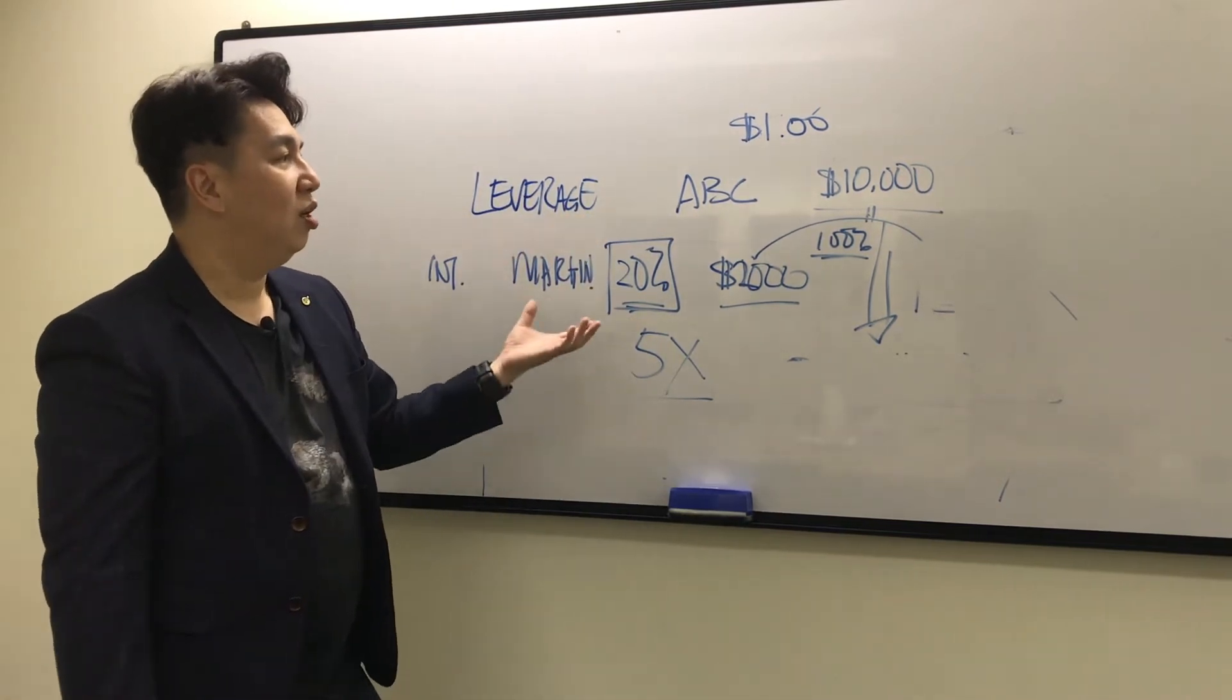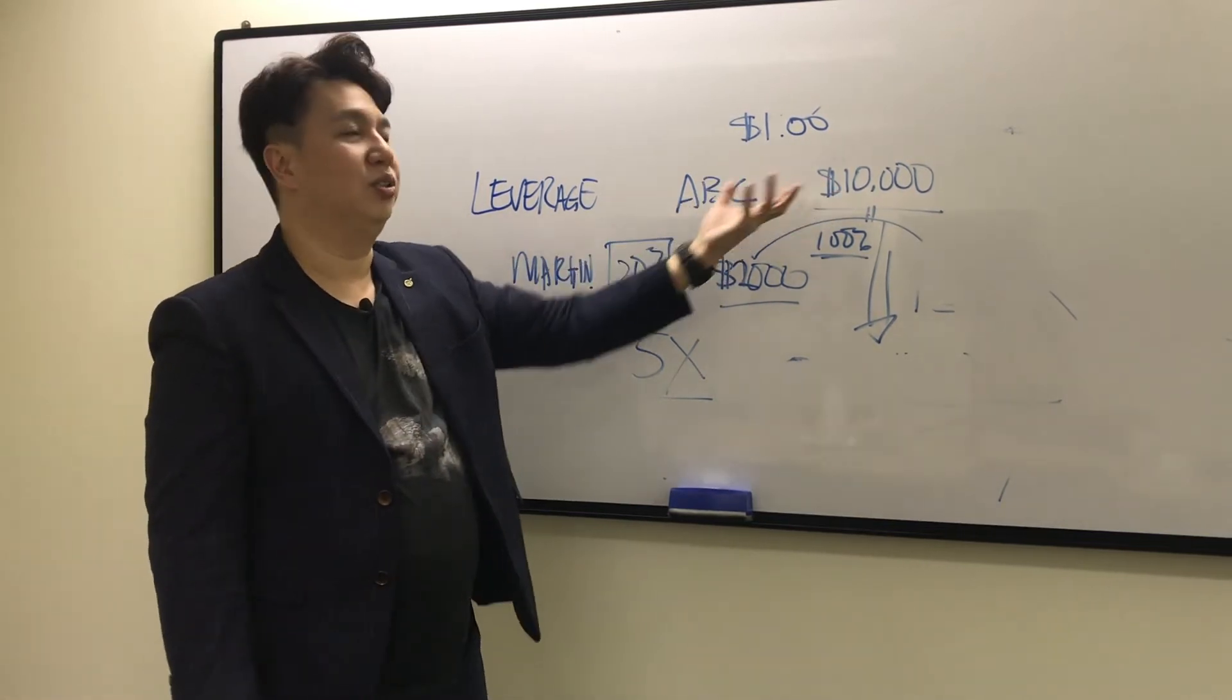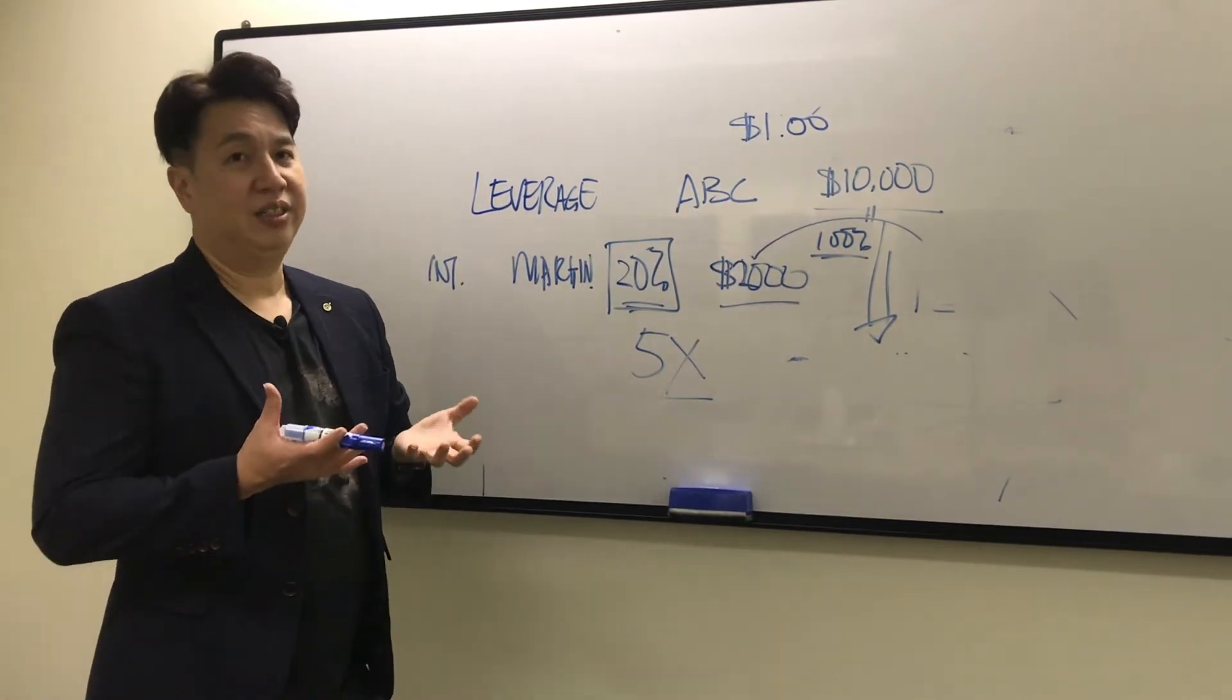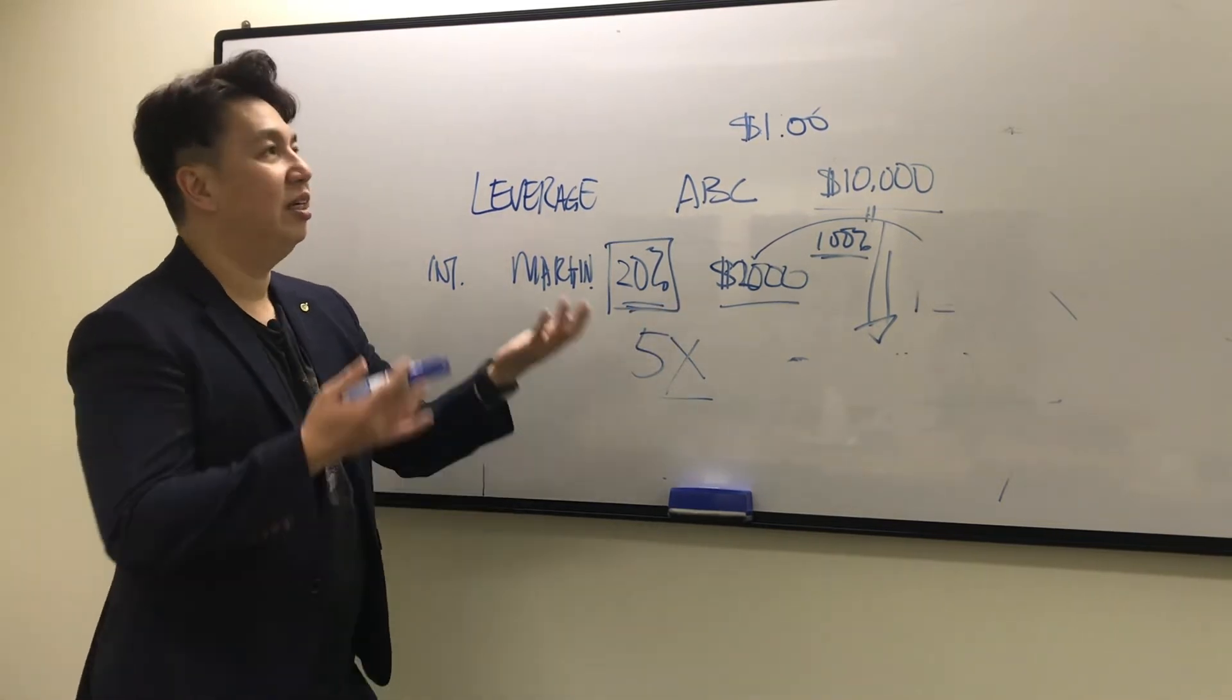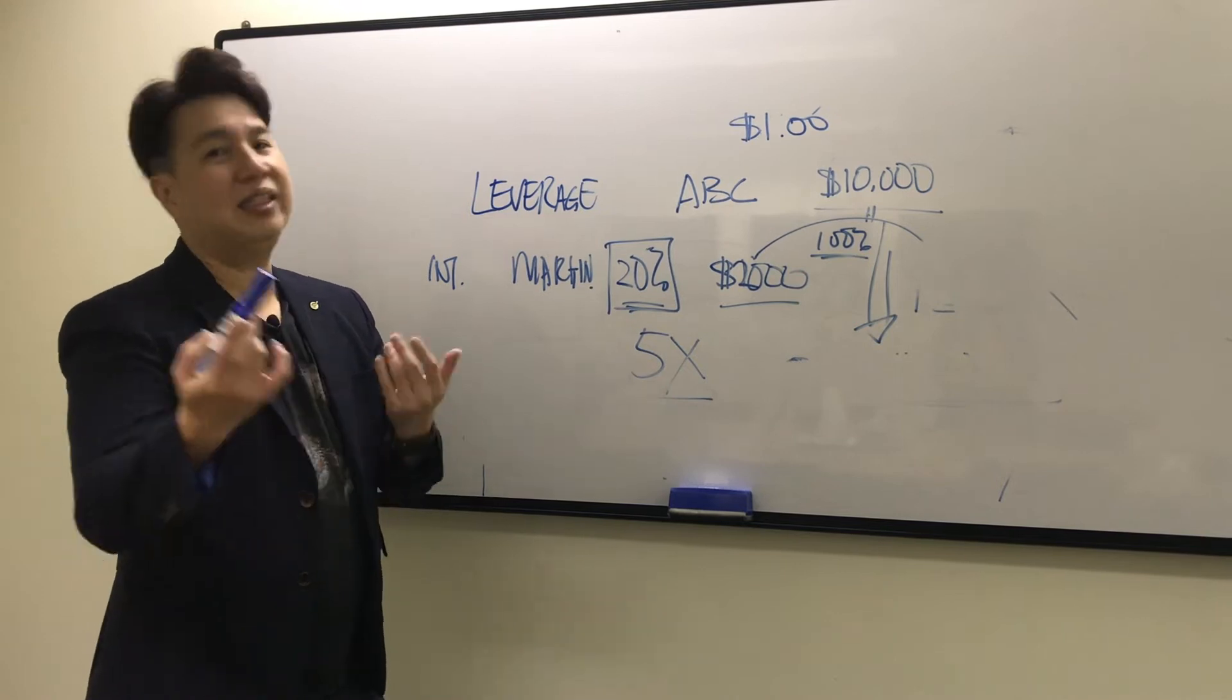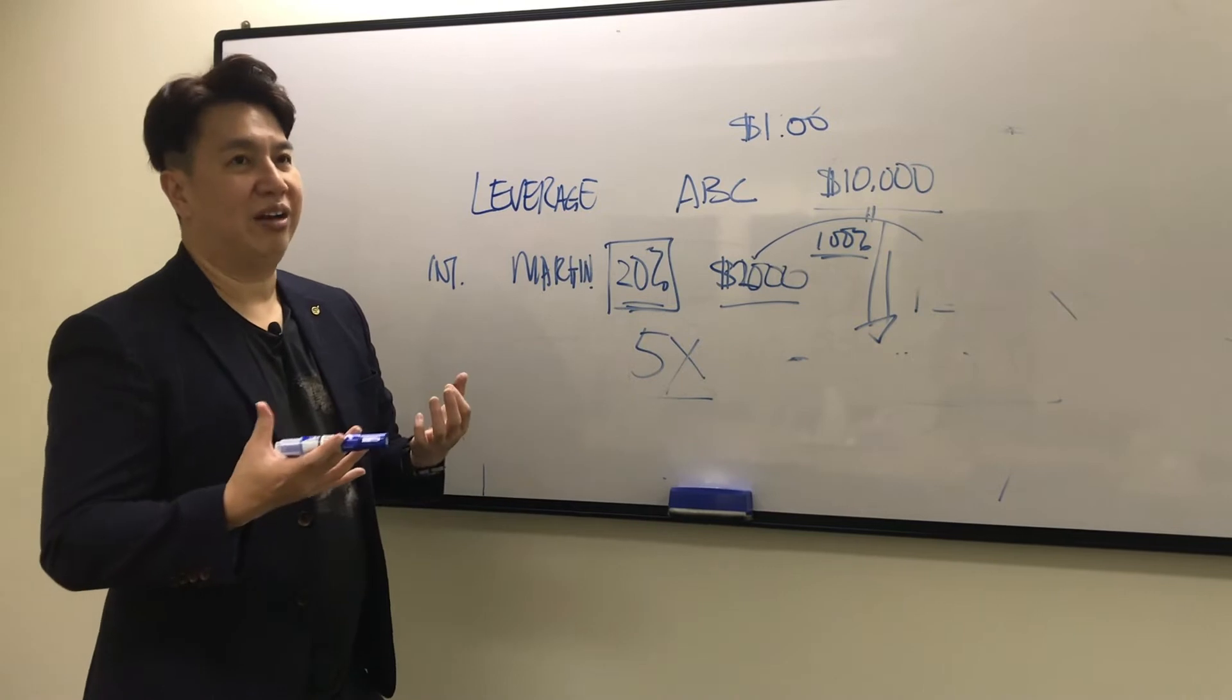You should have a buffer in the account. Let's say your account only got $2,000, even if the stock price drop by just one cent you'll get margin call. So what happens is usually you have some buffer in the account.